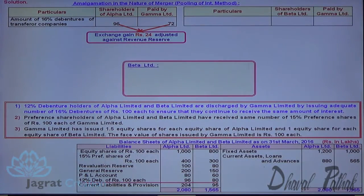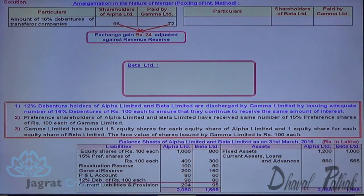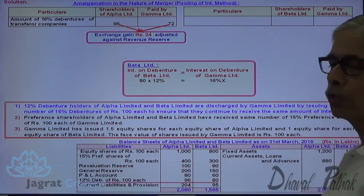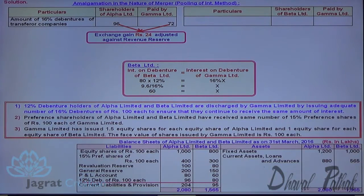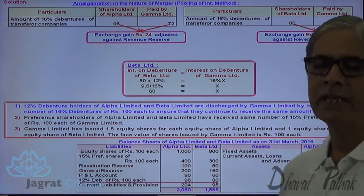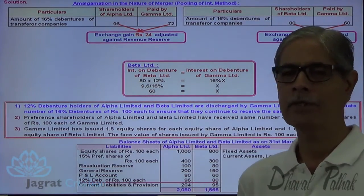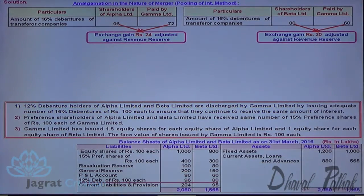Similarly, working out for Beta Limited: Beta Limited debentures are ₹80 lakhs at 12%. So 80 lakhs × 12% = 16% × X, giving 9.6 ÷ 16% = 60 lakhs. So ₹60 lakhs debentures are given in exchange for ₹80 lakhs. The exchange gain of ₹20 lakhs is adjusted to revenue reserve. This is how exchange gain occurs and must be adjusted to revenue accounts under amalgamation in the nature of merger.